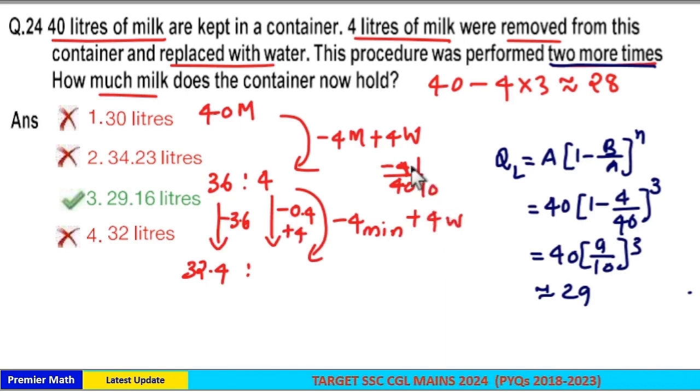point 6. So 4 plus 3.6 equals 7.6. Again from this, 4 liters mixture is taken out and 4 liters water is added. Now 32.4 plus 7.6 is again 40, so we are taking out 4 out of